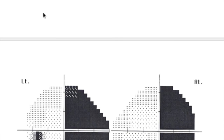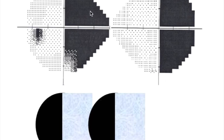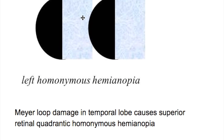Homonymous hemianopia affects the same side of both eyes. Right homonymous hemianopia affects the right side — the nasal side in one eye and the temporal side in the other. Left homonymous hemianopia affects the temporal side on the left and the nasal side on the right eye.